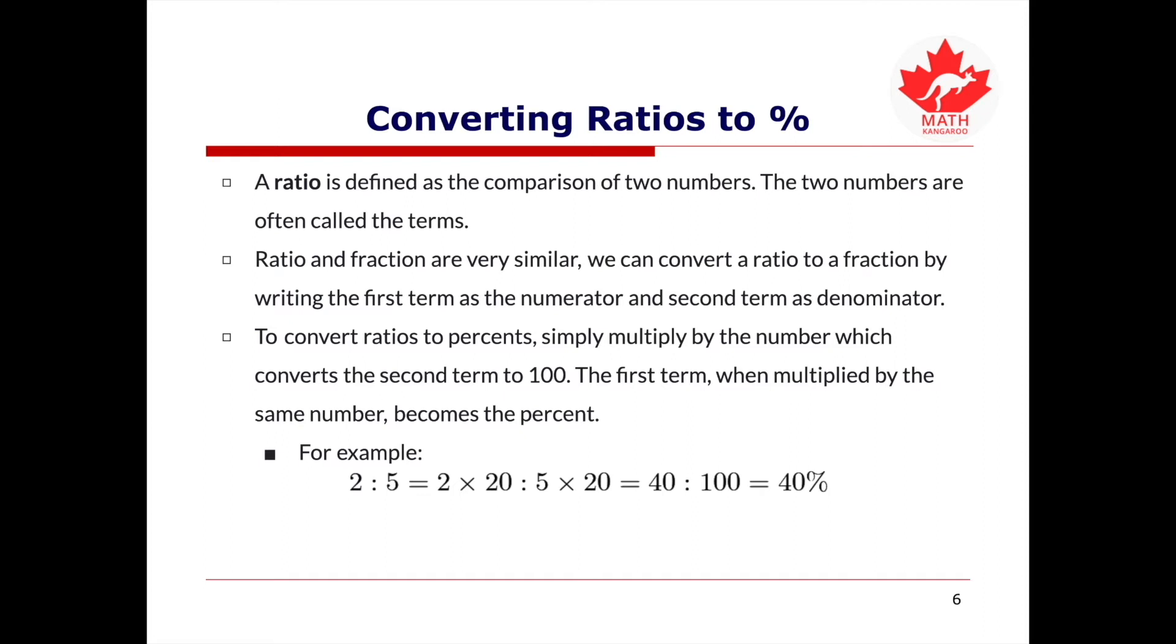For example, if we have ratio 2 to 5 and we want to convert this ratio to percent, first, we multiply the second term by 20 so that the second term becomes 100. Remember, we also need to multiply the first term by 20 as well. So we have the ratio 40 to 100, and that's equal to 40%. We can also change the ratio to a fraction first. So we know that 2 to 5 is equal to 2 over 5, and that's equal to 40 over 100. That's equal to 40%. Therefore, 2 to 5 equals 40%.